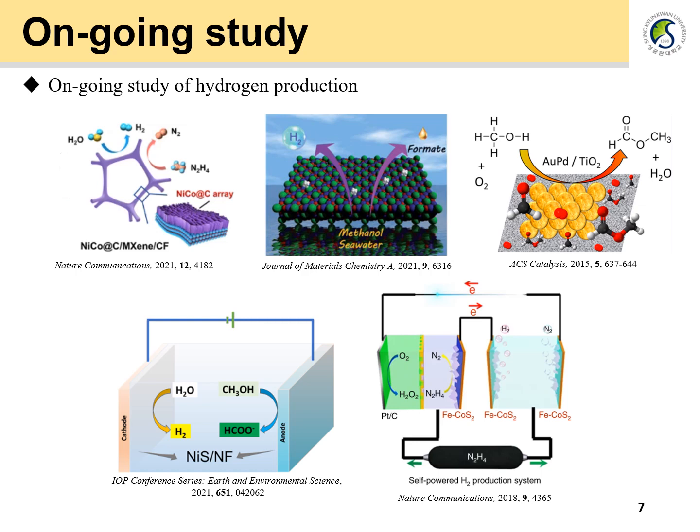As I mentioned before, research is being actively conducted on hydrogen production systems using alcohols such as methanol and ethanol, as well as various fuels. At the same time, research on catalysts is also being conducted to reduce overvoltage and increase catalyst activity. Various applications are being developed that can produce hydrogen and value-added products. Through these various studies, it is expected that the goal of carbon neutrality around the world will be achieved. With this, I will end my presentation. Thank you.